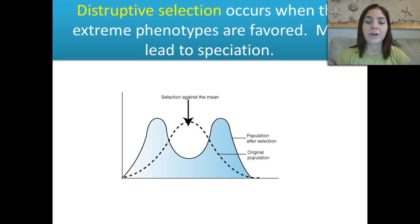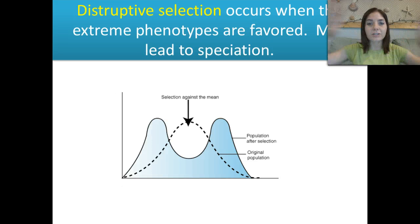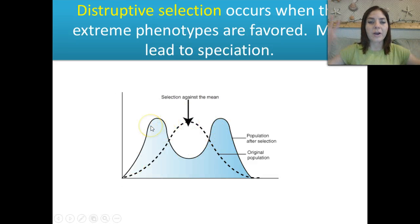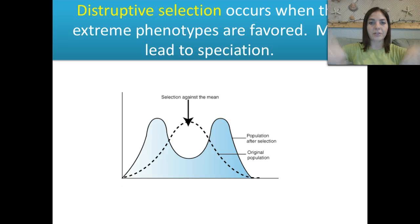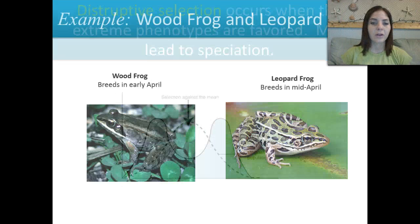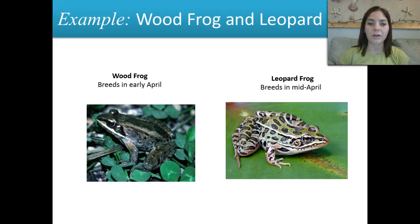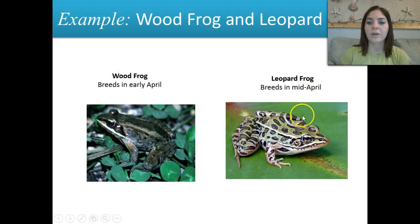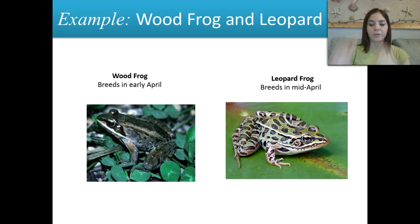Our last type is disruptive selection. This occurs when the extreme phenotypes are favored, and it can actually lead to speciation — the formation of different species. We have our mean, and then two diverging extremes with nobody in the middle. An example is the wood frog and the leopard frog — two frogs that have become two different species. The wood frog breeds in early April, the leopard frog breeds in mid-April, so they've basically separated out and no longer breed at the same time.